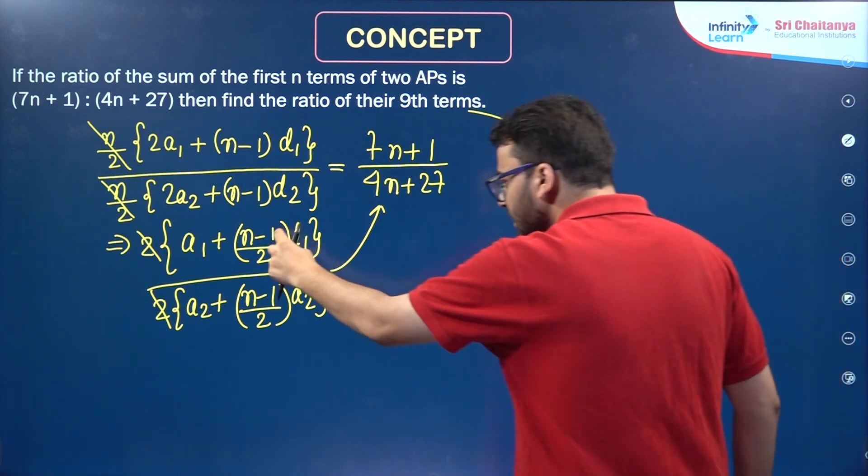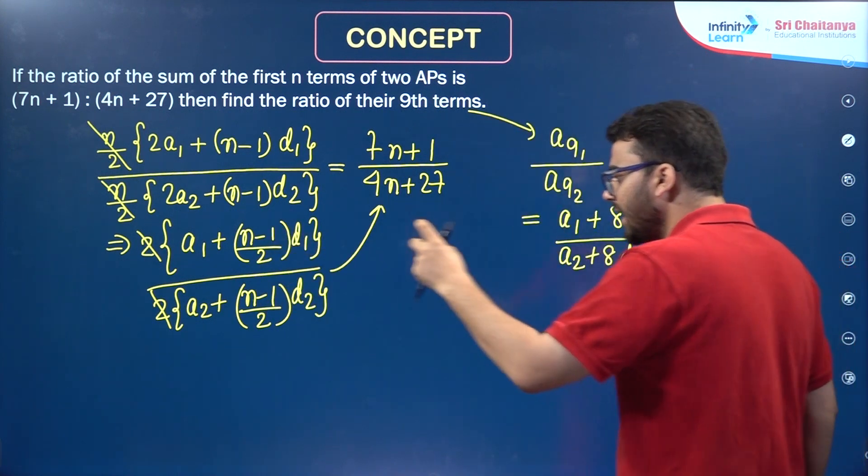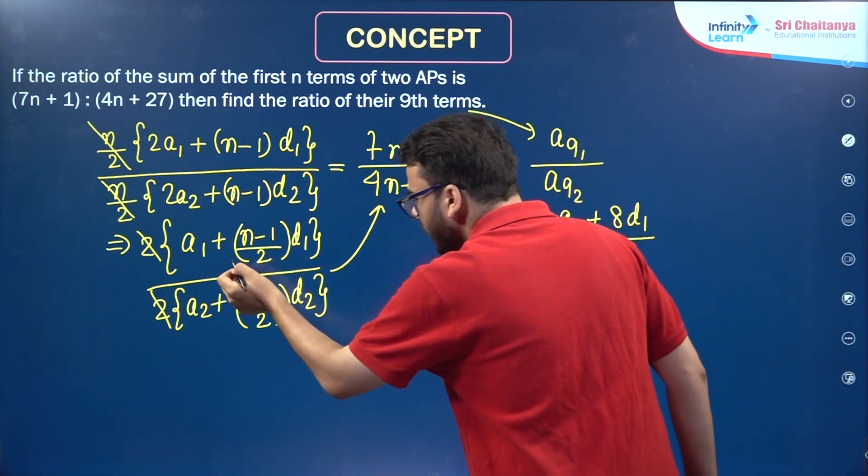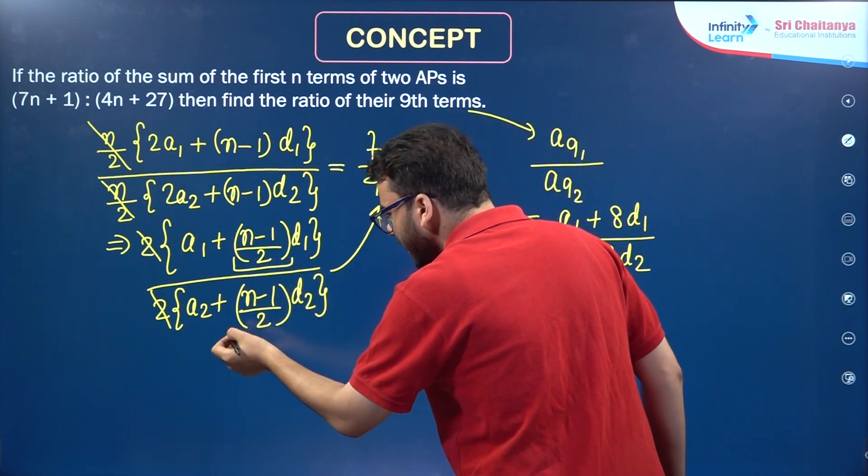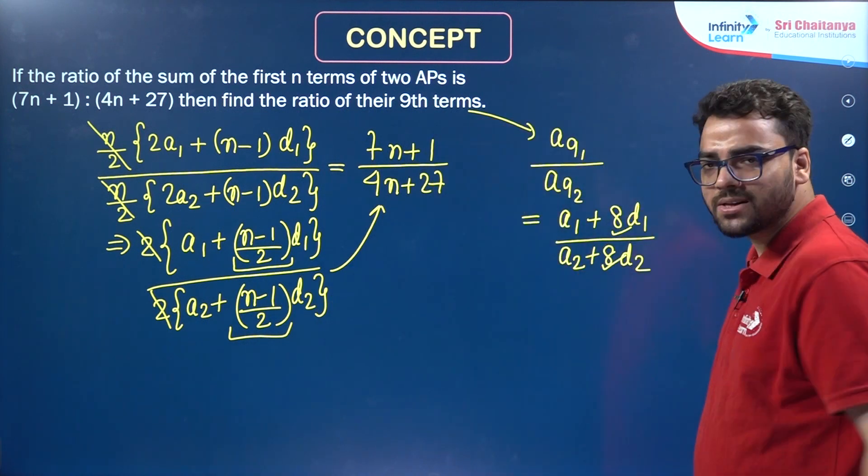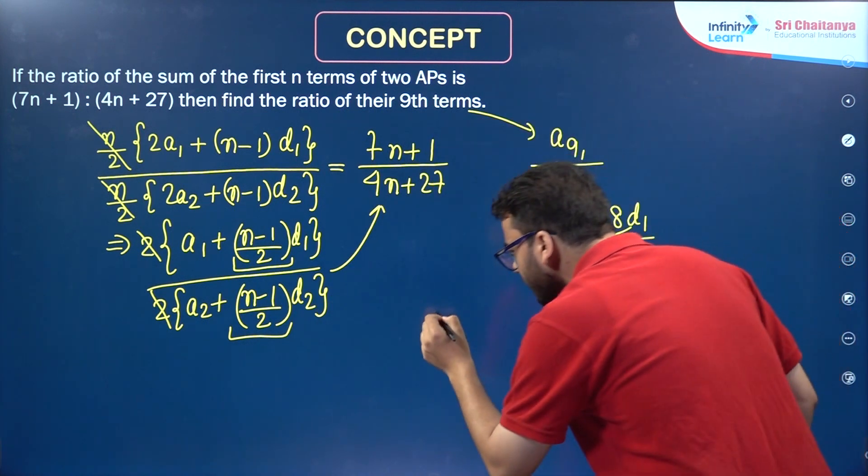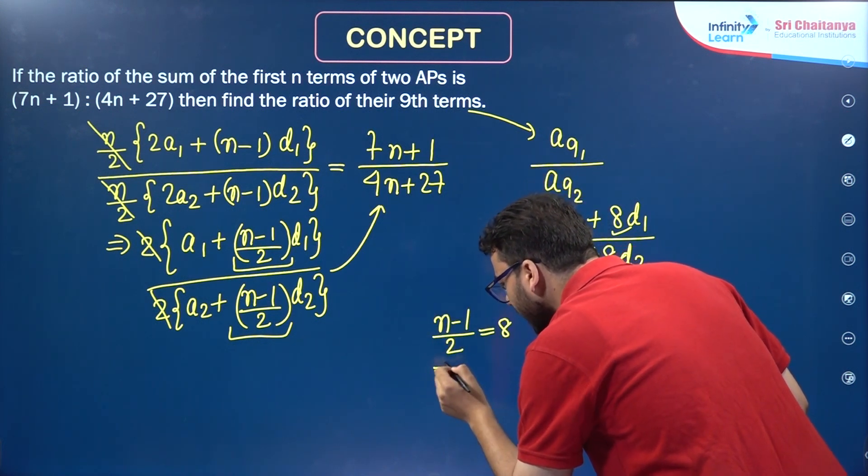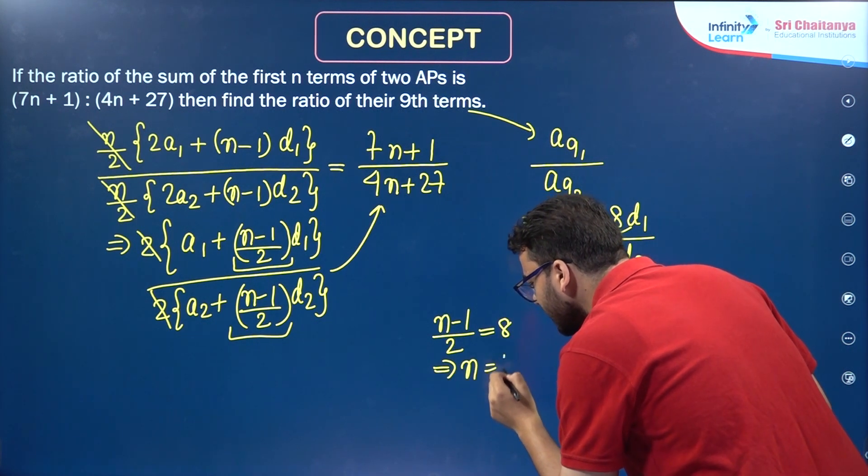Now, basically if you see this thing and this thing, they are exactly the same. The only difference is over here you are having (n-1)/2 and over here you are having n. So, can we not say that (n-1)/2 has to be equal to 8 or if you solve it for n, you will get n is equal to 17.